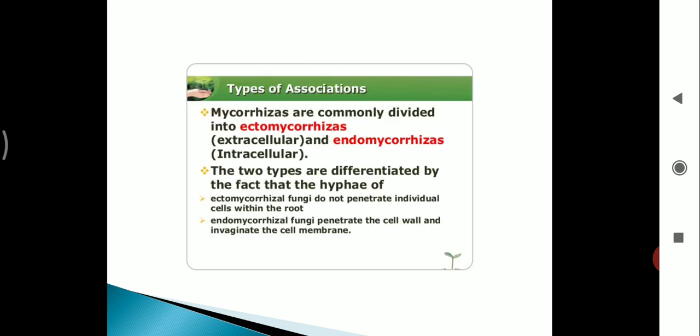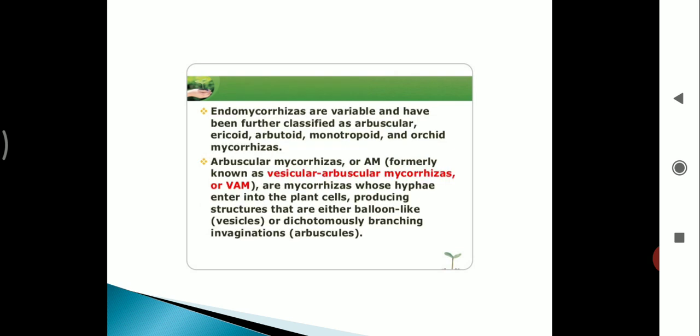Moving to types of associations. Mycorrhizae are commonly divided into two types: ectomycorrhizae, that is extracellular, and endomycorrhizae, that is intracellular. The two types are differentiated by the fact that the hyphae of ectomycorrhizae fungi do not penetrate individual cells within the root.